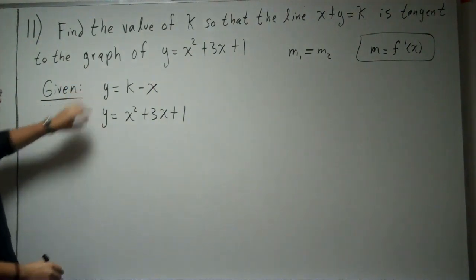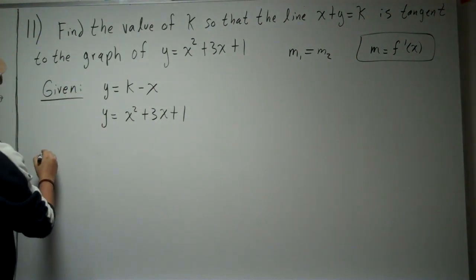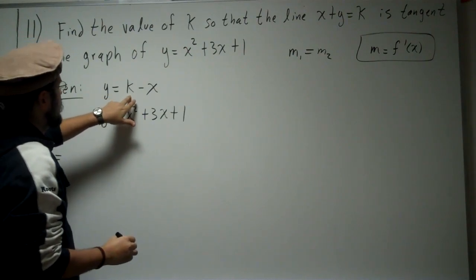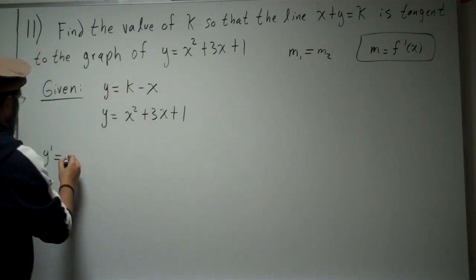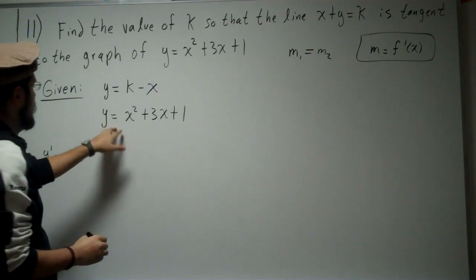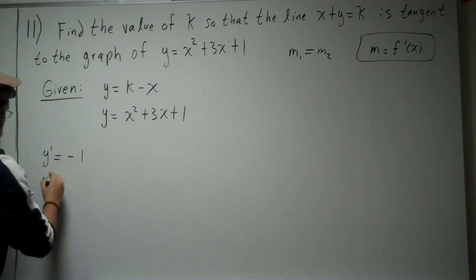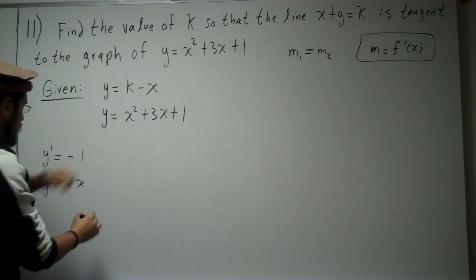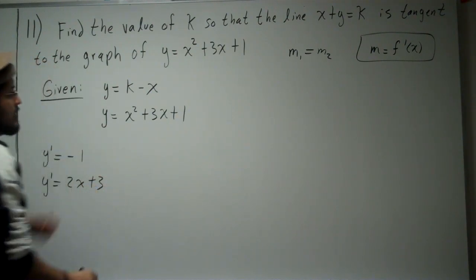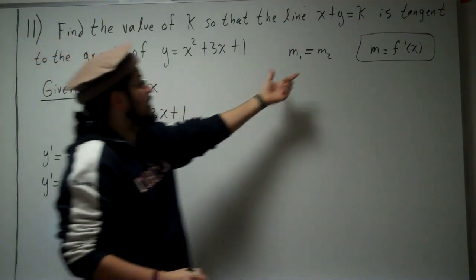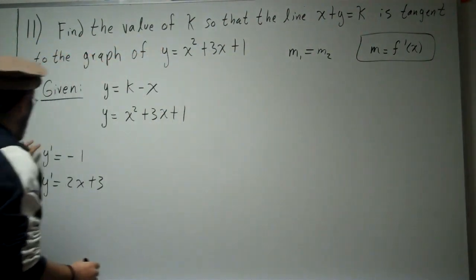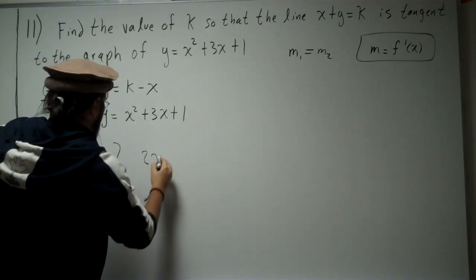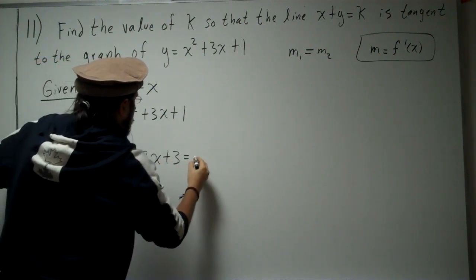So let's take the derivative. We have y prime equals, the constant is 0, the derivative of x is just minus 1. And the derivative of this one is 2x plus 3. Now we make them equal to each other. So 2x plus 3 equals minus 1.